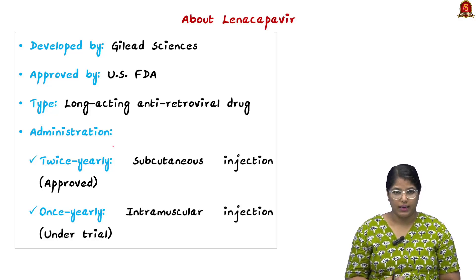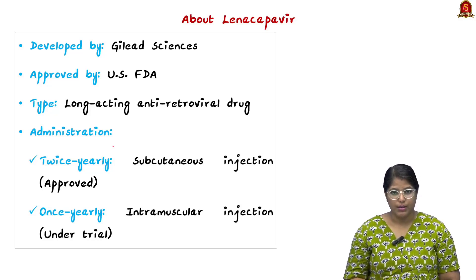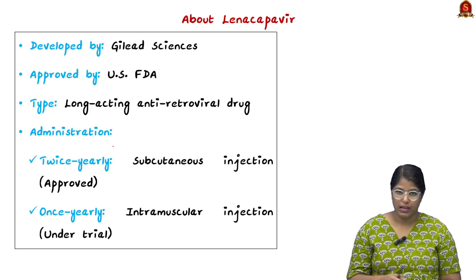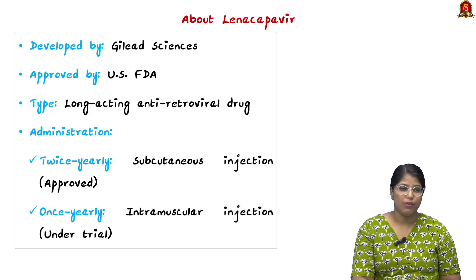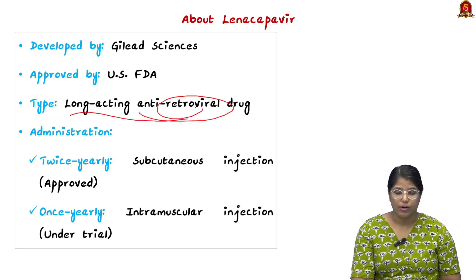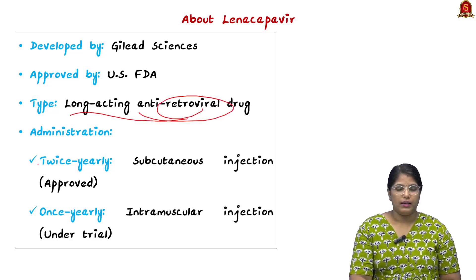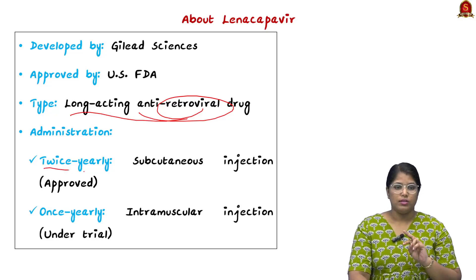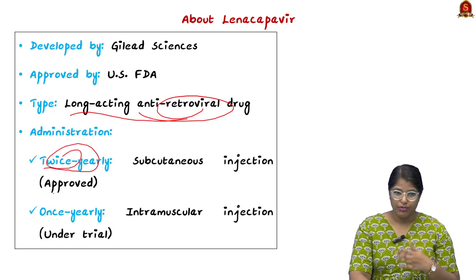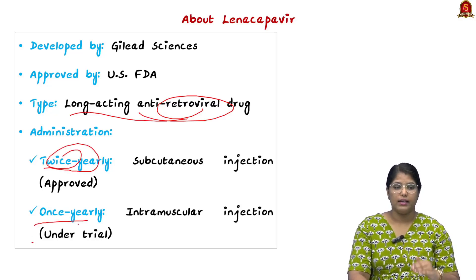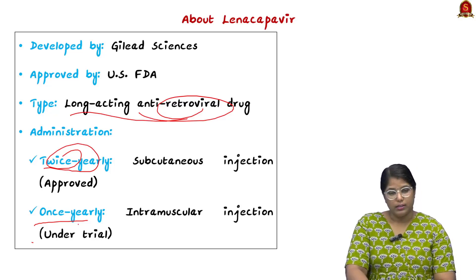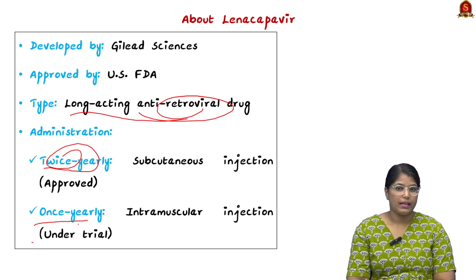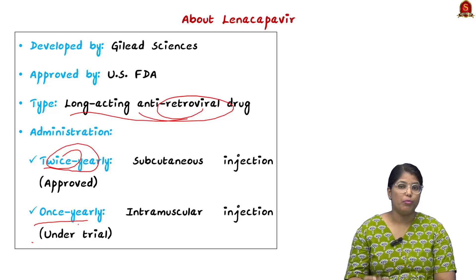Now talking about Lenacapvir, it is actually developed by Gilead Sciences, which is approved by the US FDA, and it is a type of long-acting antiretroviral drug. It has two different variants: once yearly and twice yearly. The twice yearly version has been approved and the once yearly is currently under trial, which is why it has shown a lot of promising results.